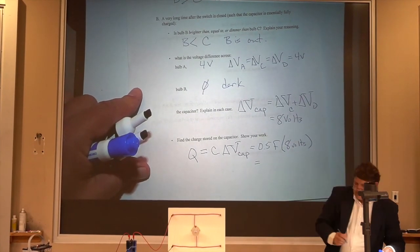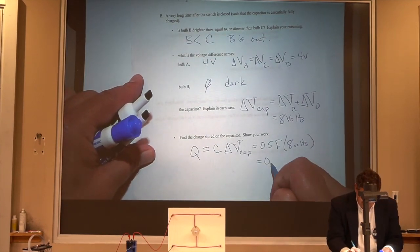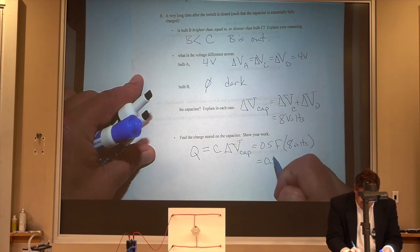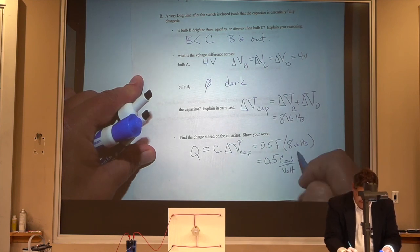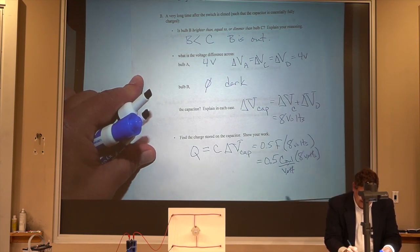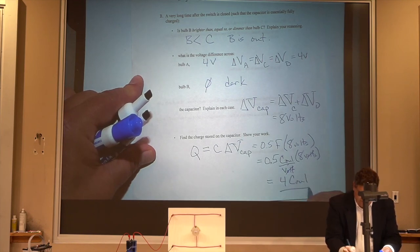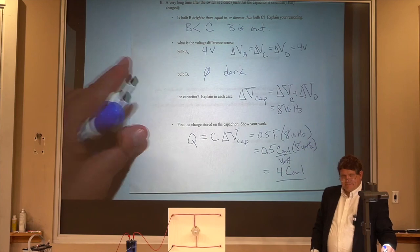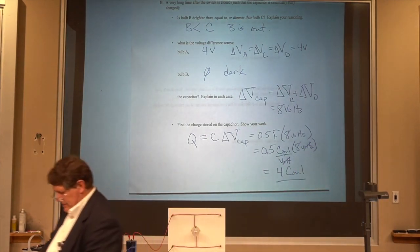But this is what I was trying to say and I didn't do it very well. A farad is just a fancy way of honoring Michael Faraday, but what we really mean is coulombs per volt. And if I multiply that by eight volts, the volts cancel out and I'm left with four coulombs. Okay. Talk to your neighbor. See if your neighbor got that homework problem right.